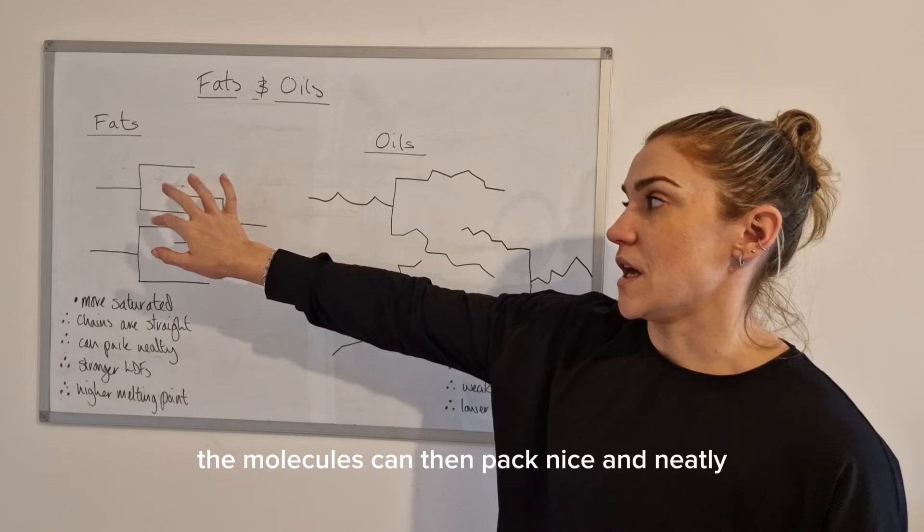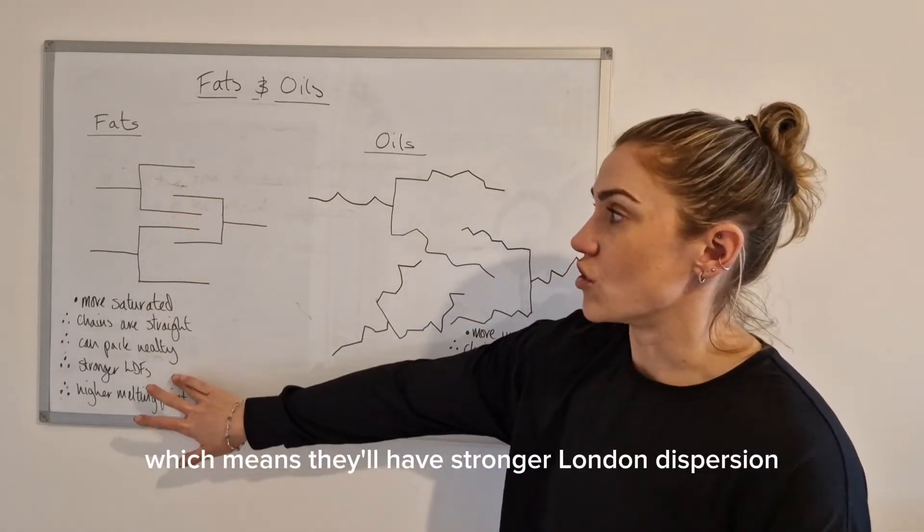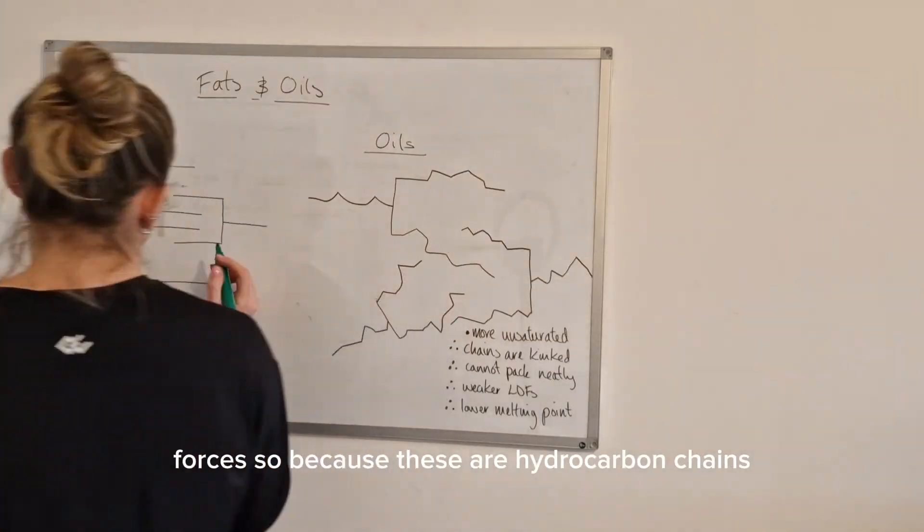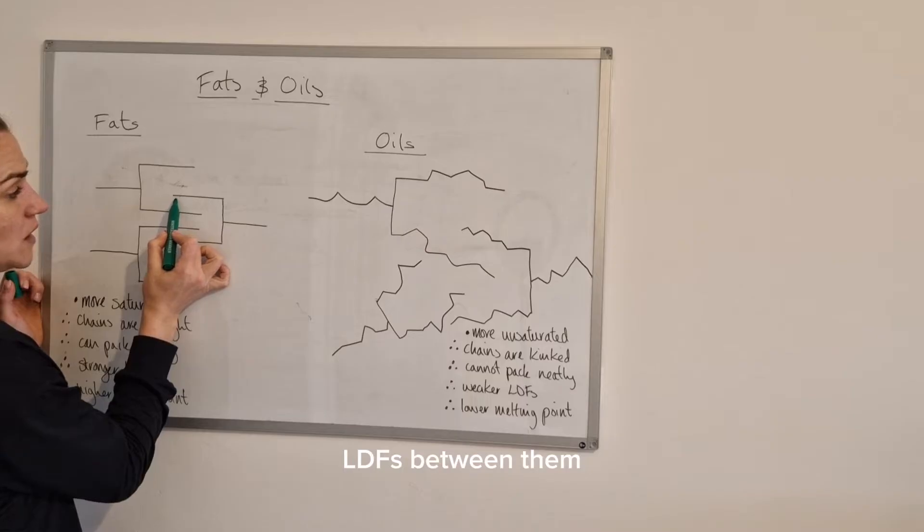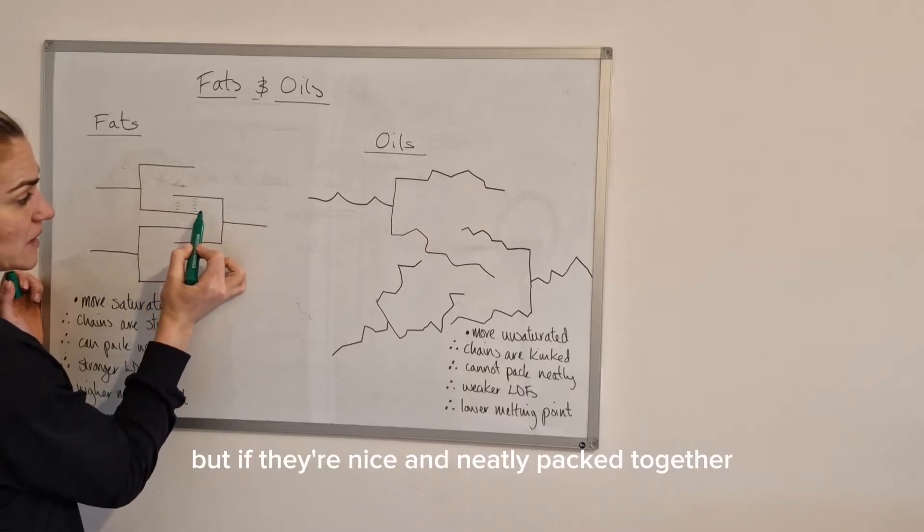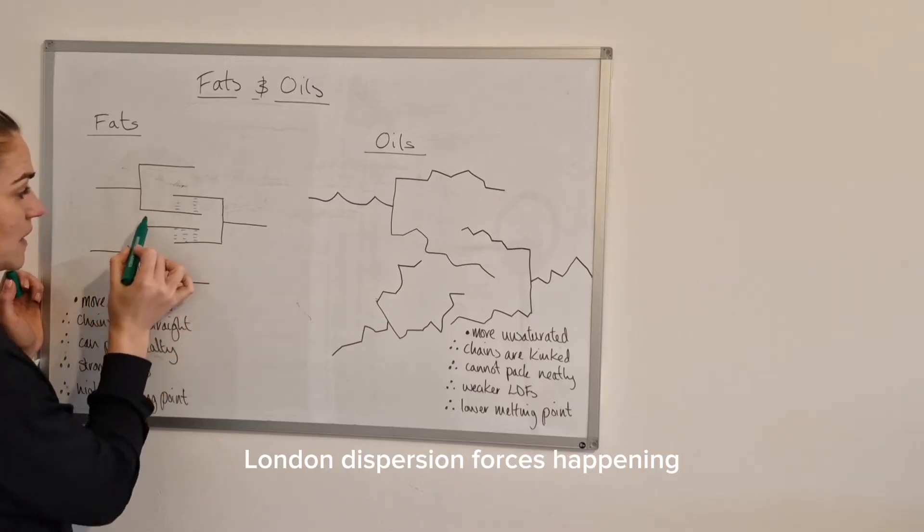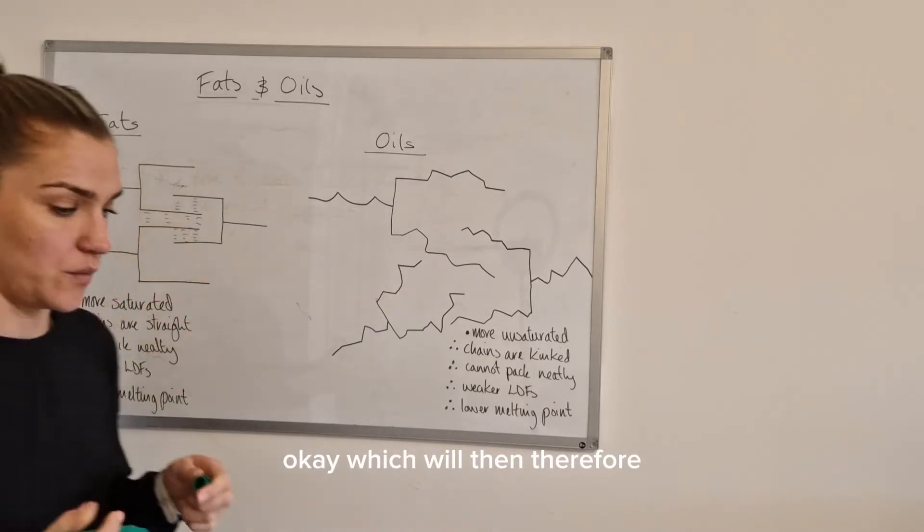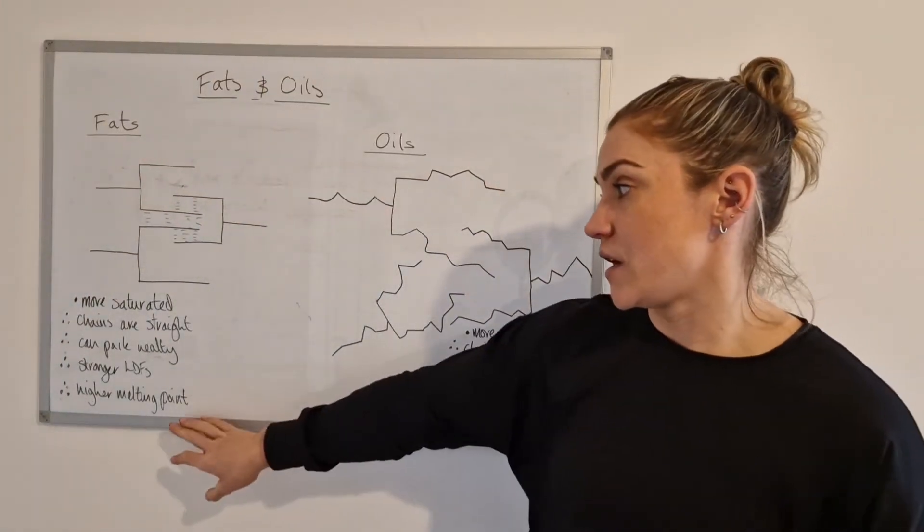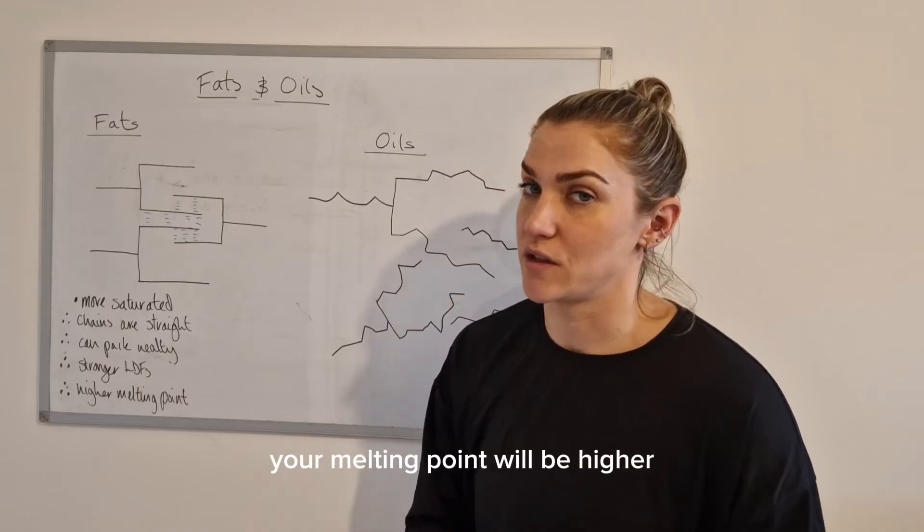This means that the molecules can then pack nice and neatly, which means they'll have stronger London dispersion forces. Because these are hydrocarbon chains they'll only manage to form LDFs between them, but if they're nice and neatly packed together you'll get lots of London dispersion forces happening, which will create a higher melting point.